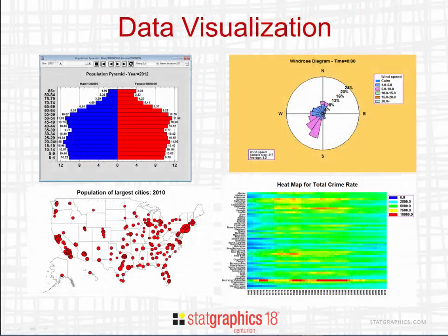Here you see some of the new procedures for visualizing data. In the top left, you see a population pyramid, which is used to show how populations change over time. In the upper right is a wind rose diagram, used to show the distribution of wind speed and wind direction. In the bottom left is a population map of the largest cities in the United States in 2010 — we can now create maps from any shapefile. The bottom right shows a heat map displaying the total crime rate in each state over a period of years.